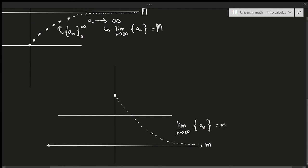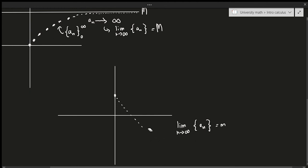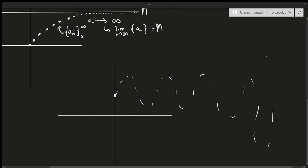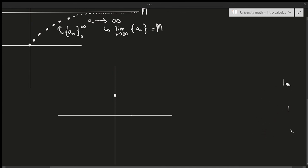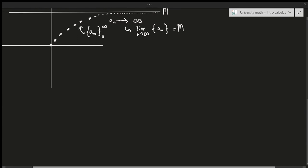Why does it have to be bounded? Without a bound, the sequence would just decrease forever and never converge. Why does it have to be monotonic? If it's not monotonic, it's neither increasing nor decreasing across all points — it oscillates back and forth, doesn't tend to any fixed value, and therefore doesn't converge. That's why both conditions are required.